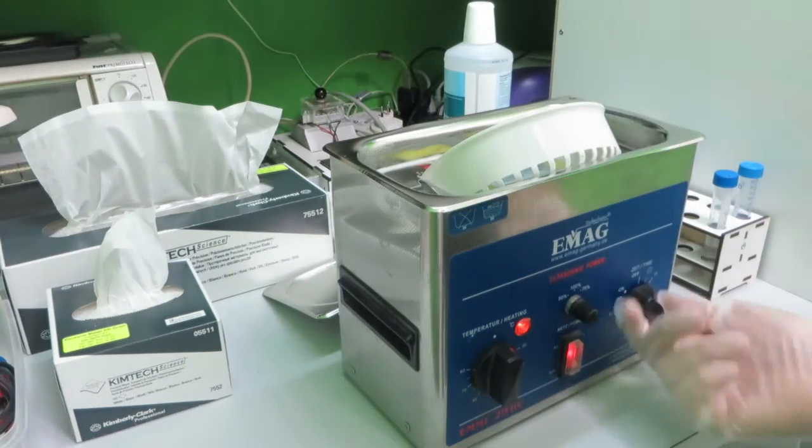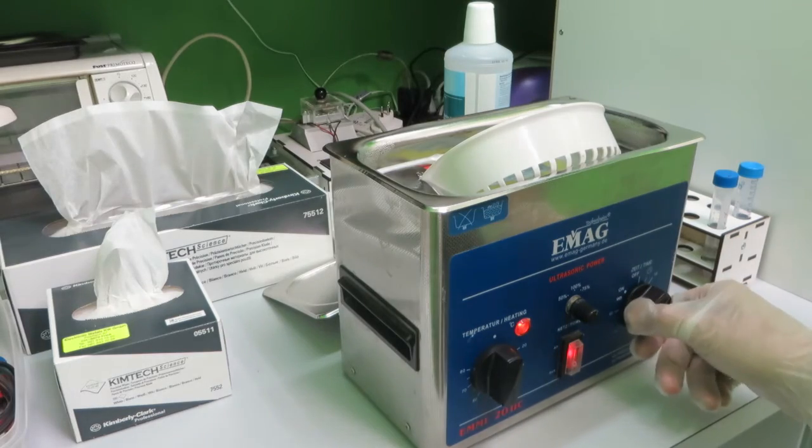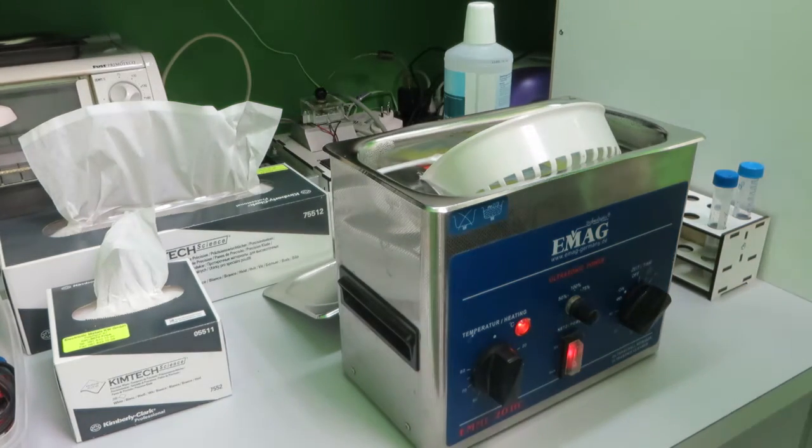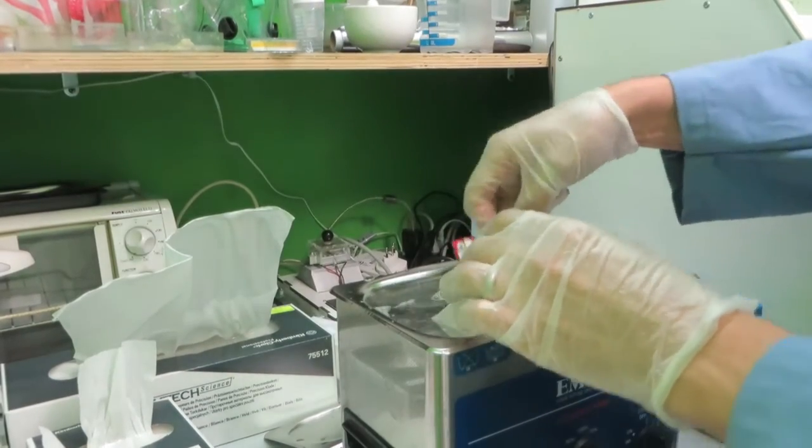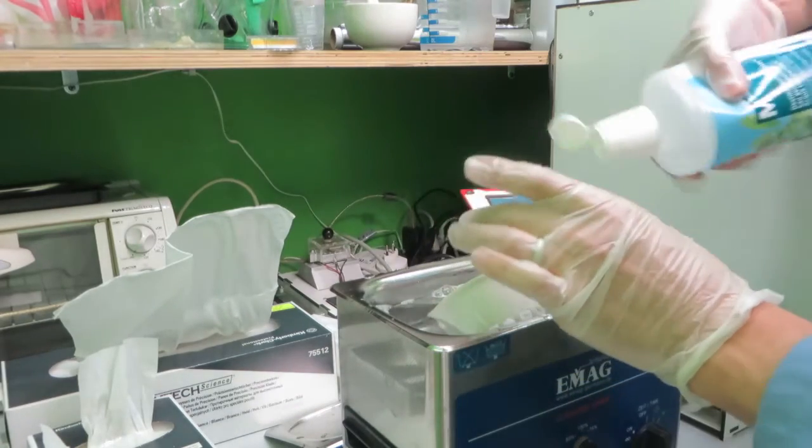The bath contains pure water, a mixture with isopropanol and some soap. I put the carrier in the bath for about 15 minutes at 60 degrees Celsius and then rinse it with pure water.